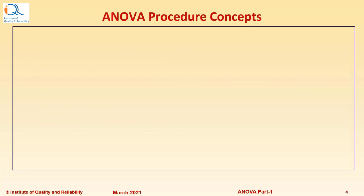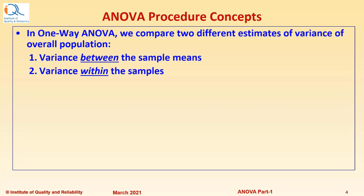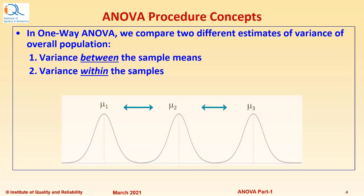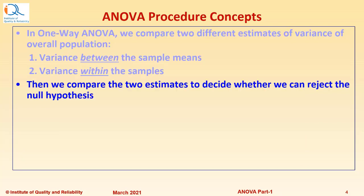Let us look at concepts of the ANOVA procedure. In one-way ANOVA, we compare two different estimates of variance of the overall population: one, variance between the sample means, and two, variance within the samples. Then we compare the two estimates to decide whether we can reject the null hypothesis.